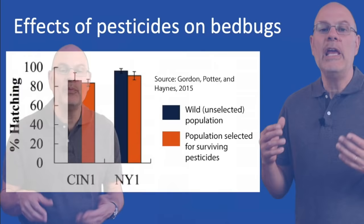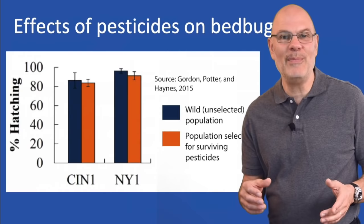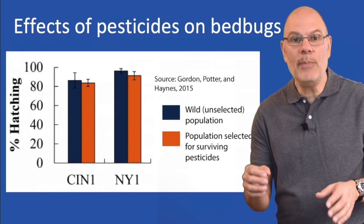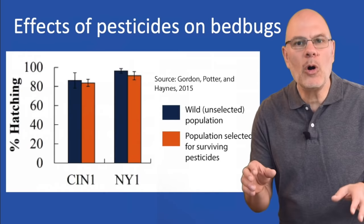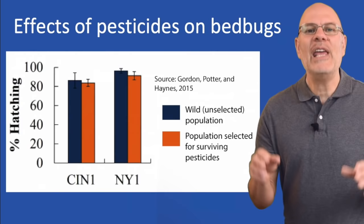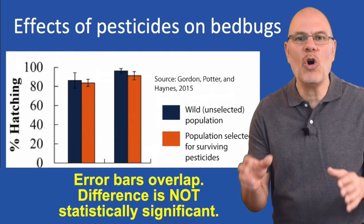Here's another example. A study was done on the effect of pesticides upon various aspects of the life history of different strains of bedbugs. The blue bars represent populations that were not exposed to the pesticide — that's the wild type. The orange bars show bedbugs that were grown for several generations in the presence of the pesticide. One part of the study looked at the effect of these pesticides on the percentage of bedbug eggs that were able to hatch. For the two strains shown, was there an effect? If you don't consider the error bars, you'll get the wrong answer. The blue bars are higher than the orange bars for both strains, but look at the error bars — their range overlaps. That means there's not a statistically significant difference in egg hatching.